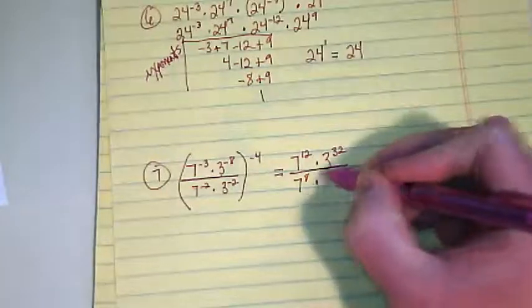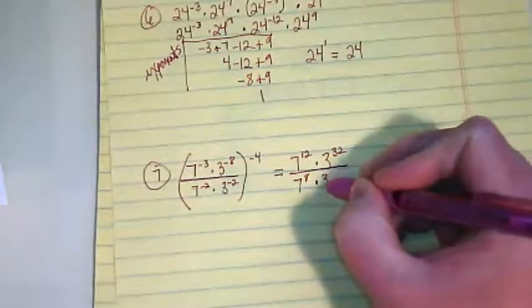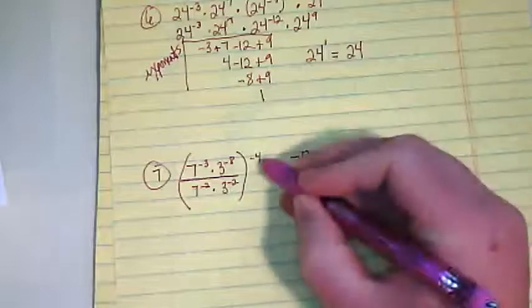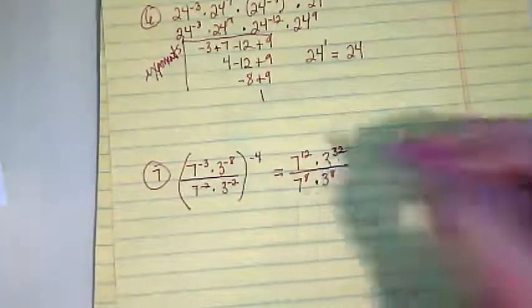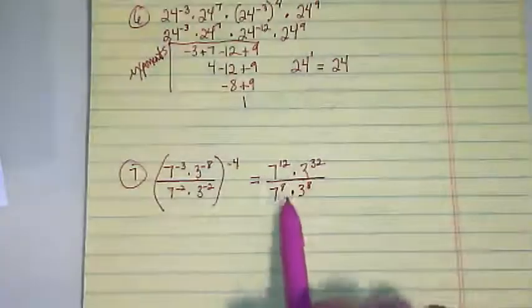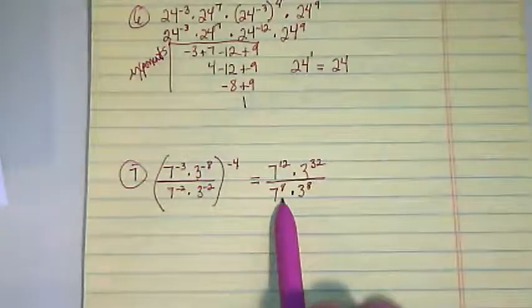Times 3 to the 8th. And then I'm going to take the ones in the denominator with the same base and the numerator and I'm going to rewrite this.